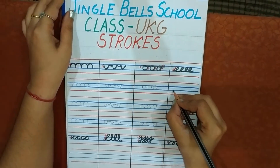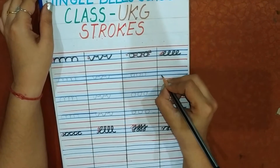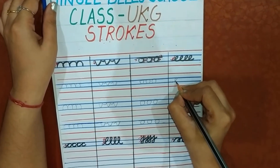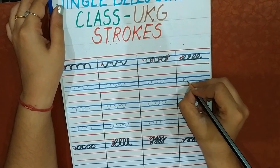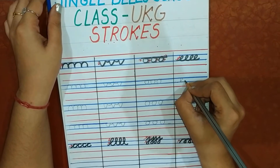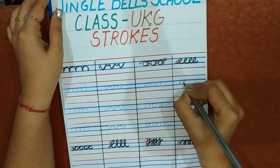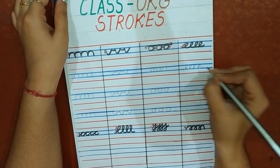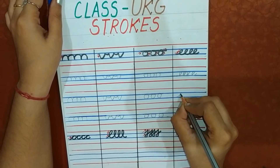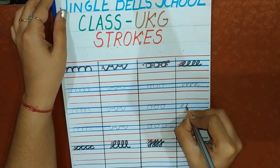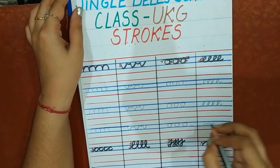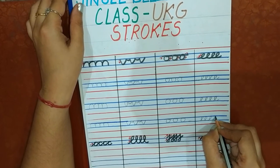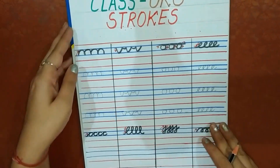Now, cursive E. You have to start from the third line, that is the blue line. Slant. Then make a C like this — it becomes E. Then go up, then circle it, then come like this. You have to make it four times, starting from the third line. Do it very neatly.